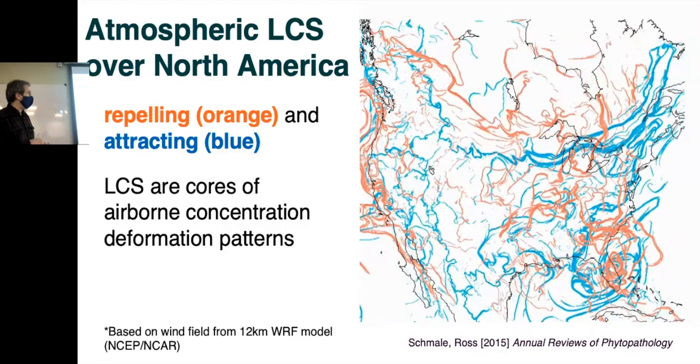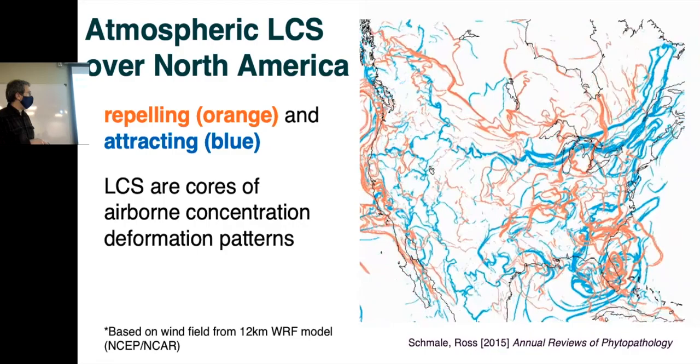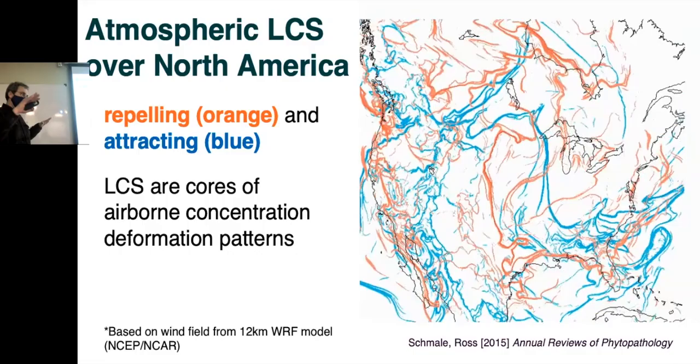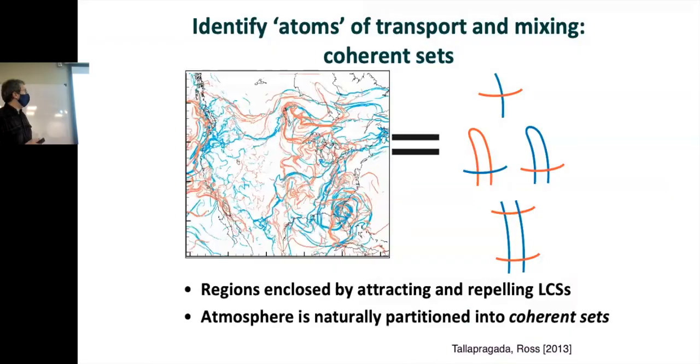These are some LCS over North America. You can see North America here, right? Baja, California, Virginia, Canada. So this is just looking at one particular height. And you can see a lot of weather pattern stuff going on. I don't know if you saw at the beginning, there was actually a hurricane down here. Fucking Florida.